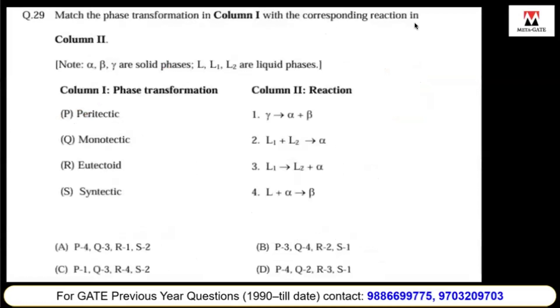Match the phase transformation in column one with the corresponding reaction: alpha, beta, gamma solid phases, liquid, liquid one, liquid two. Peritectic reaction, monotactic, eutectoid, and synthetic. If you consider the iron-carbon diagram, the peritectic reaction is liquid plus delta gives rise to gamma. Eutectoid reaction is austenite gives alpha plus cementite. Monotactic is one liquid giving one liquid plus solid. So it's four, three, one, two.